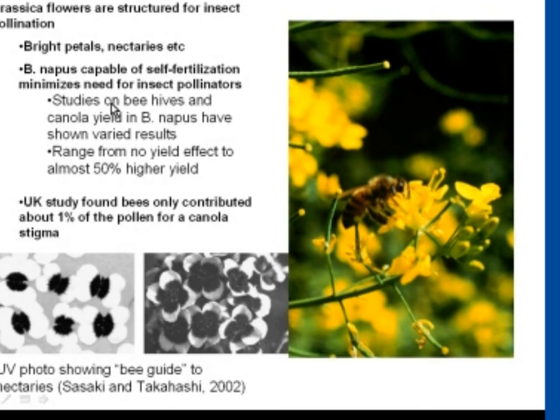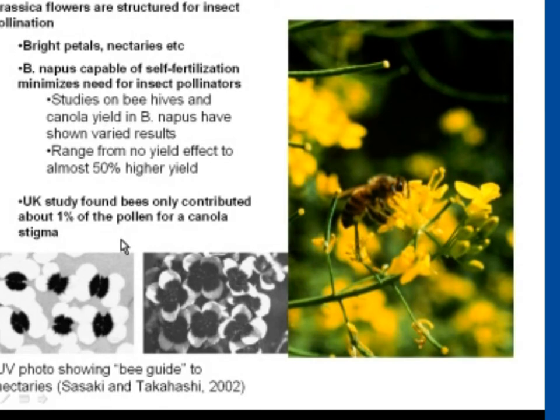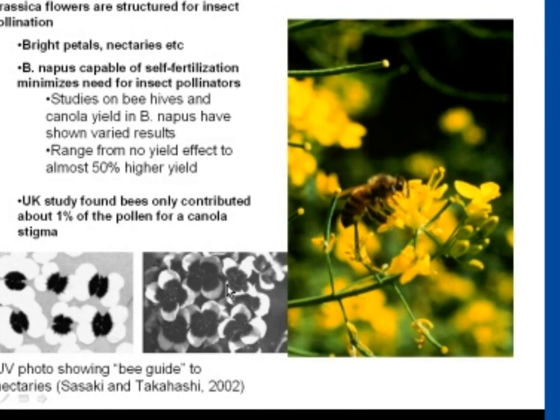Brassica napus — Argentine canola — is capable of self-fertilization, and therefore the insect pollinator need is a lot less. But when you look at studies on beehives and canola yield in Argentine canola, results are varied — ranging from no effect to perhaps 50% higher yield. In the UK, they found that bees only contributed about 1% of the pollen that landed on a canola stigma. Under our field conditions, it's a process that happens quite readily without bees.